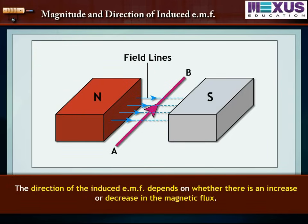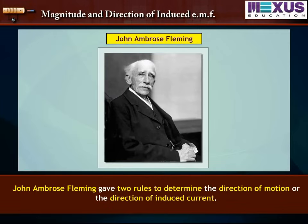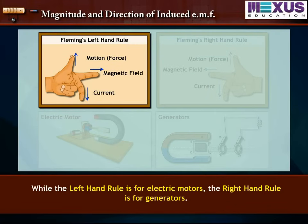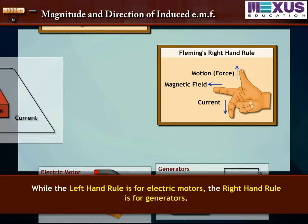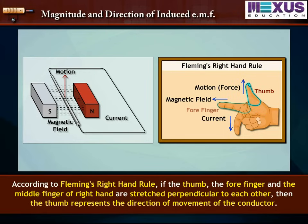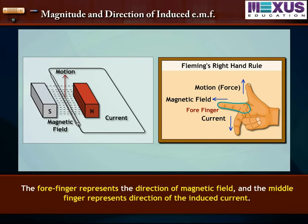The direction of the induced EMF depends on whether there is an increase or decrease in the magnetic flux. John Ambrose Fleming gave two rules to determine the direction of motion or the direction of induced current. While the left hand rule is for electric motors, the right hand rule is for generators. According to Fleming's right hand rule, the thumb, forefinger, and middle finger of the right hand are stretched perpendicular to each other. If the thumb represents the direction of movement of the conductor, the forefinger represents the direction of the magnetic field, and the middle finger represents the direction of the induced current.